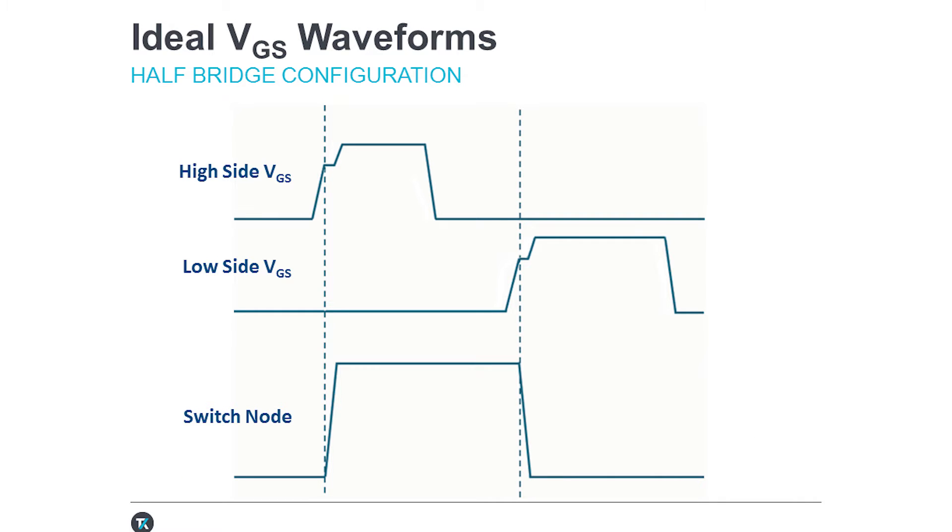Here's an example of ideally what we expect these waveforms to look like in this kind of half-bridge configuration. You can see the high-side FET turns on, and the source voltage, the switch node, turns on at the same time.